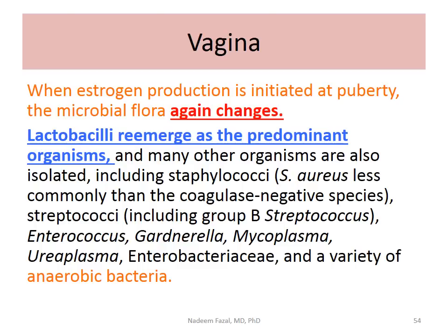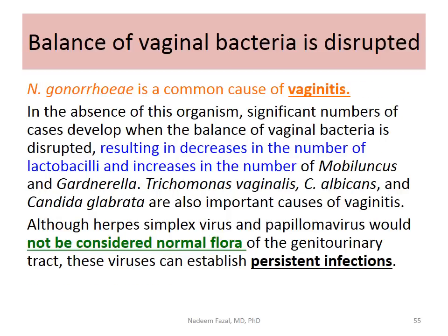Since this epithelium is sensitive to estrogen, when estrogen kicks in again at puberty, you will see microbial changes in vaginal normal flora — lactobacilli re-emerge as the predominant organisms. Other organisms present include Staph aureus, coagulase-negative species, streptococci including Group B, Enterococcus, Gardnerella, Mycoplasma, Ureaplasma, and a variety of anaerobic bacteria. You need to remember that if you change that balance, you may end up seeing bacterial vaginosis, one of the common female problems seen in clinics.